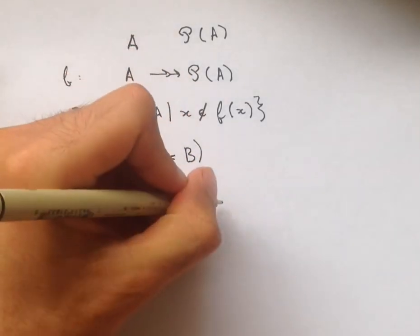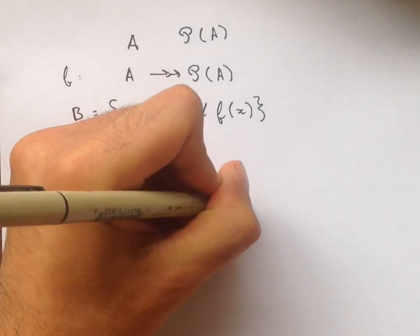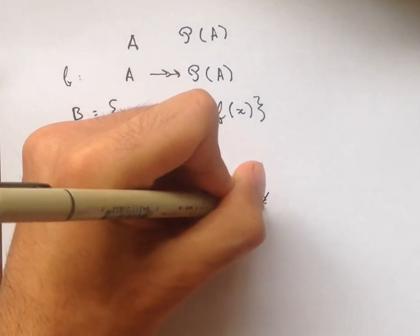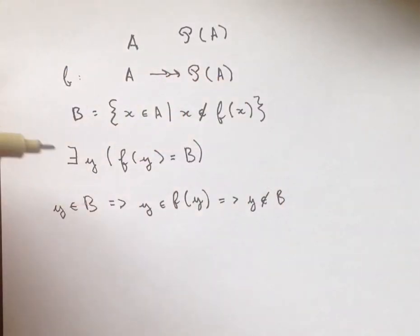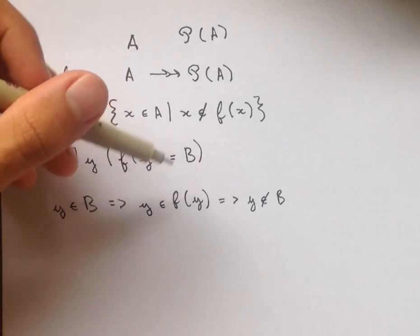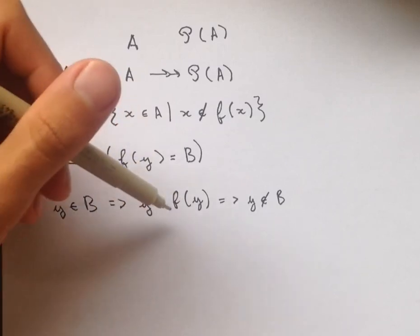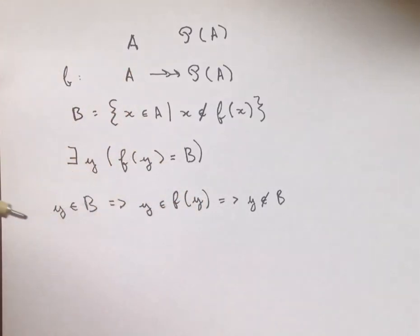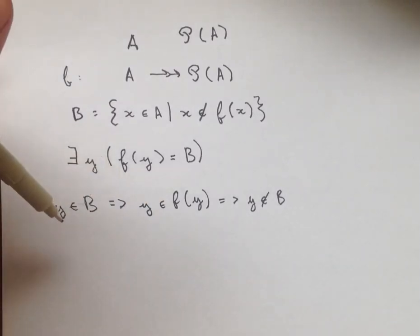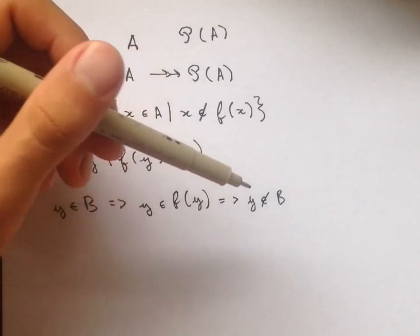And that means that Y is not an element of B, because if you look at the definition of what B is, Y being an element of F of Y is the opposite of Y not being an element of F of Y, which is the condition that Y would have to satisfy if it was going to be in B. So we reach a contradiction here because we started by saying that Y was in B and then we got that Y was not in B.